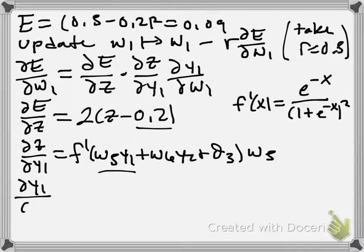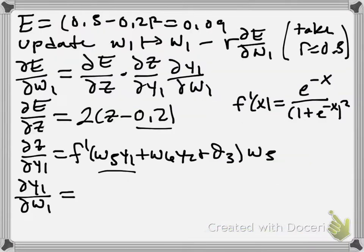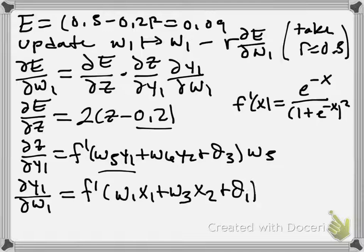Last piece now. We have dY1/dW1, that is going to give us just the derivative of F with respect to the argument. So we have F prime of W1X1 plus W3X2 plus theta1, and then the derivative of the argument with respect to W1 is X1.